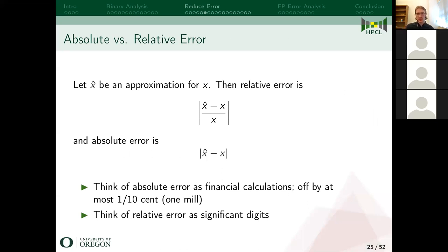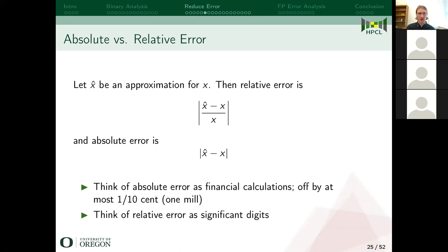I'll quickly define absolute versus relative error. Let X-hat be a floating point approximation for some real number X. The relative error is the ratio (X - X-hat) / X, and the absolute error is just the absolute difference between the two. Absolute error is like a financial calculation — regardless of how many shares you buy, it will always be rounded to the nearest tenth of a cent. Relative error tends to be slightly more informative; I think of it in terms of the number of significant digits you keep track of throughout a computation.